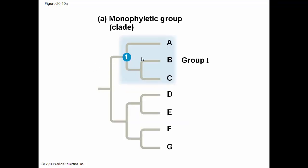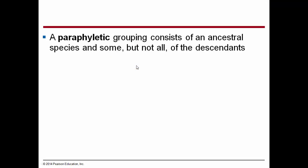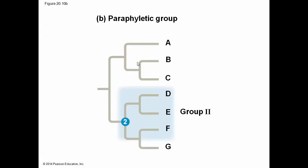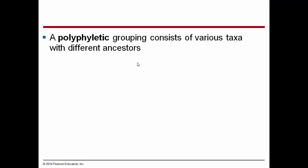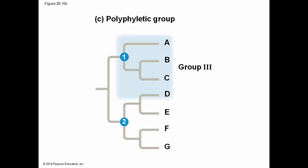A monophyletic group is the clade — anywhere you have a common ancestor that includes all of those related organisms, that is a clade. A paraphyletic grouping includes an ancestral species and some, but not all, of the descendants. A polyphyletic grouping consists of various taxa with different ancestors.